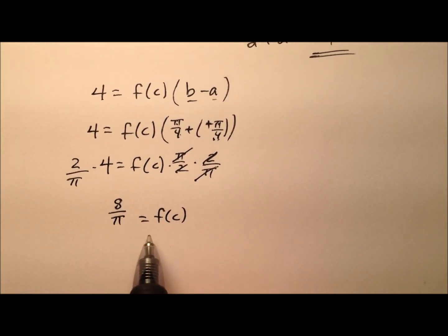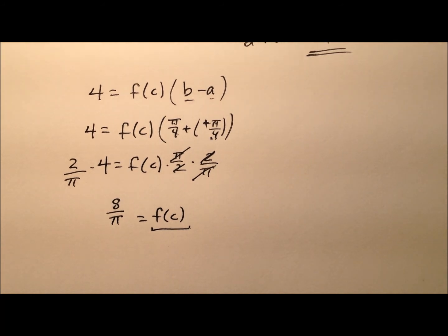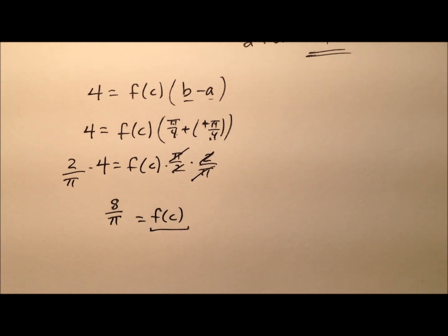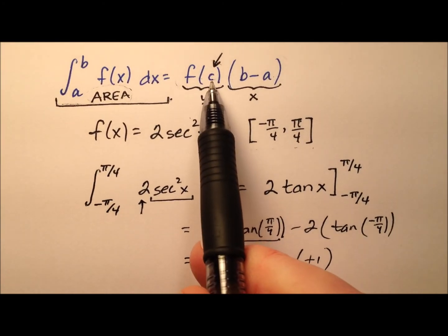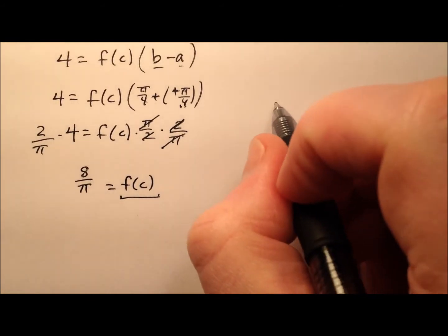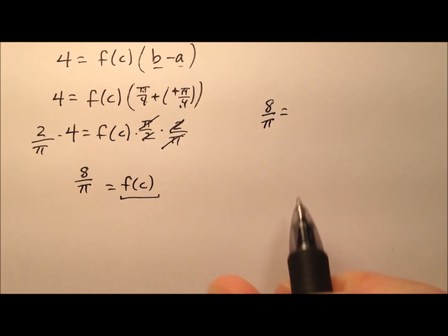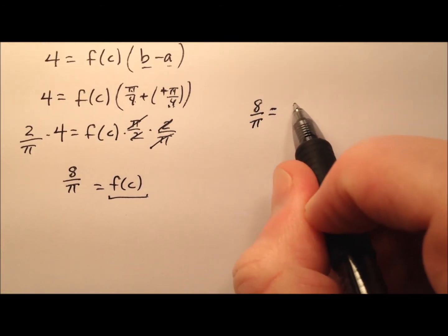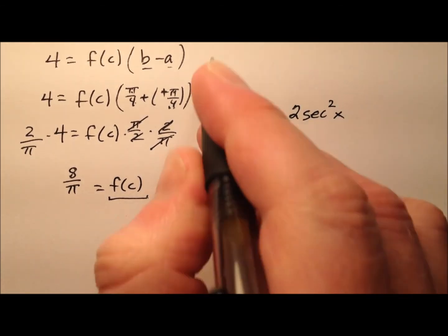So this f of c — which is the height of that rectangle and also the average value of our function — equals 8 over pi. To find the value of c guaranteed by the mean value theorem for integrals, we take 8 over pi and set it equal to our function, 2 secant squared x.